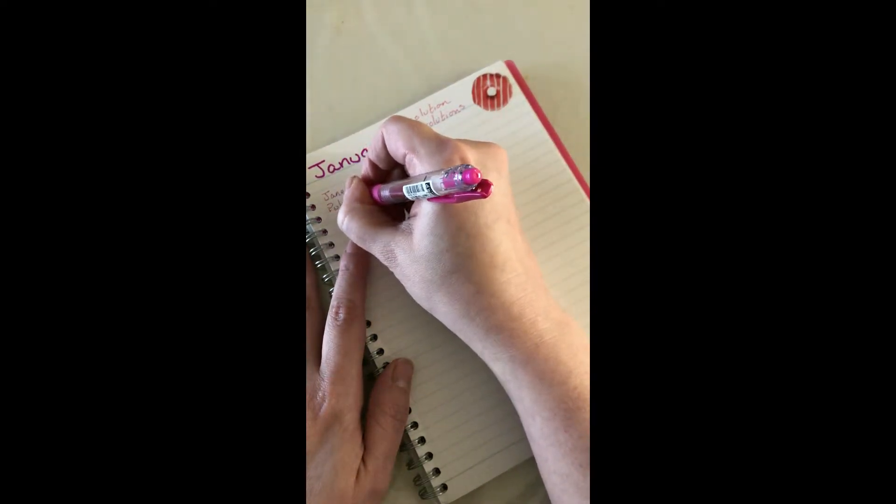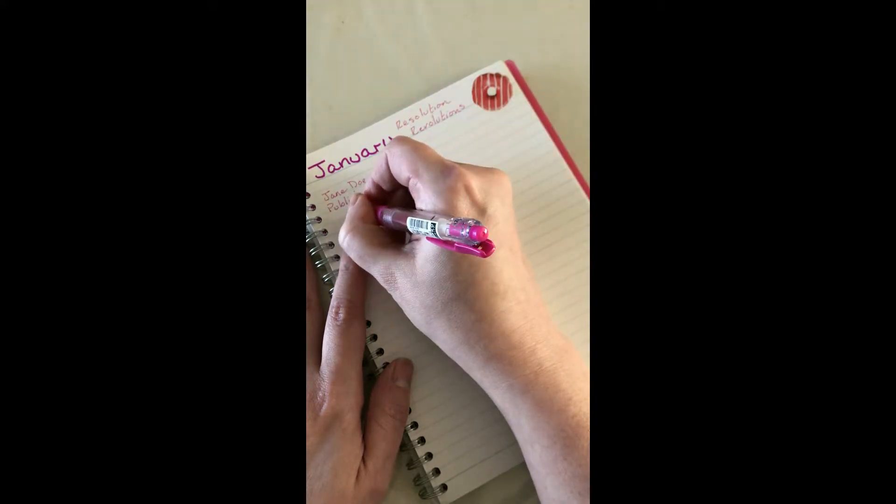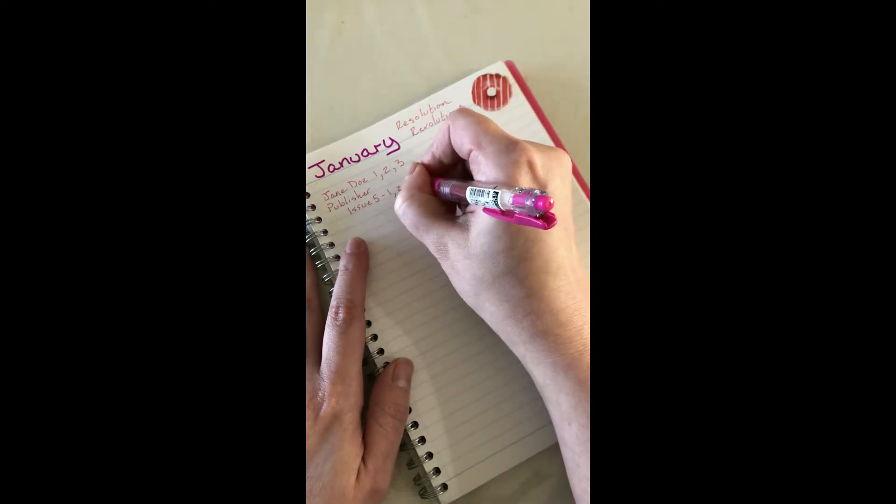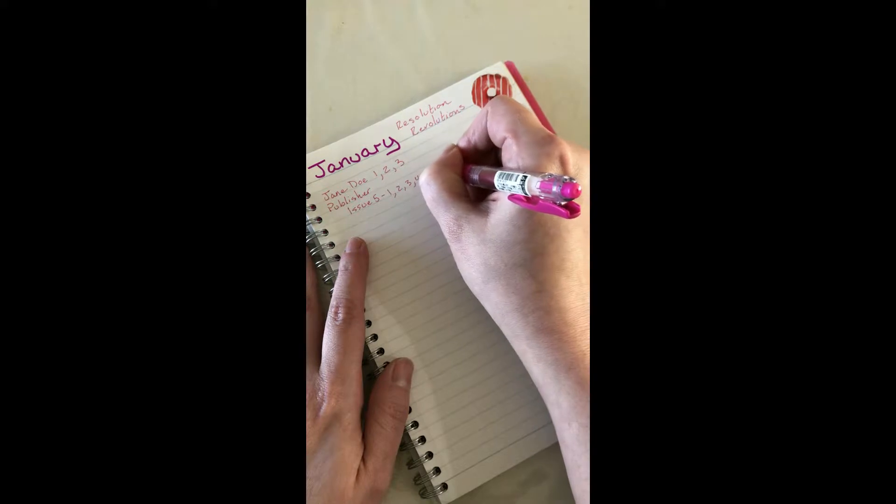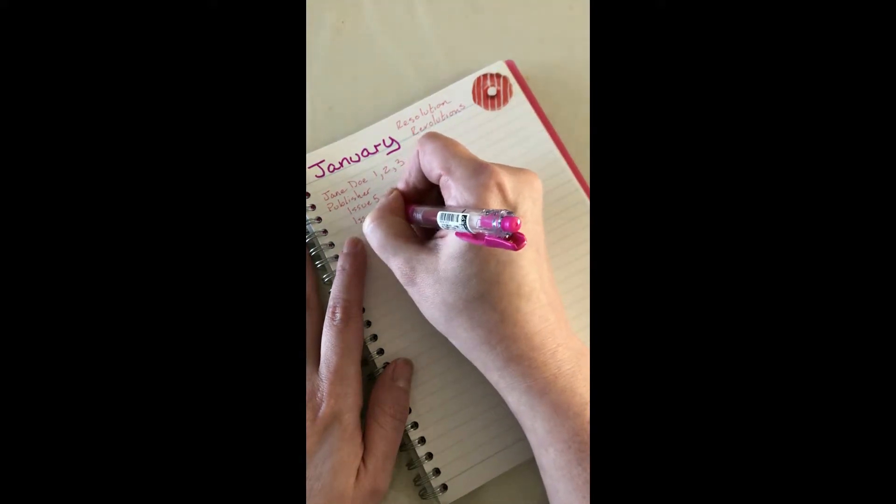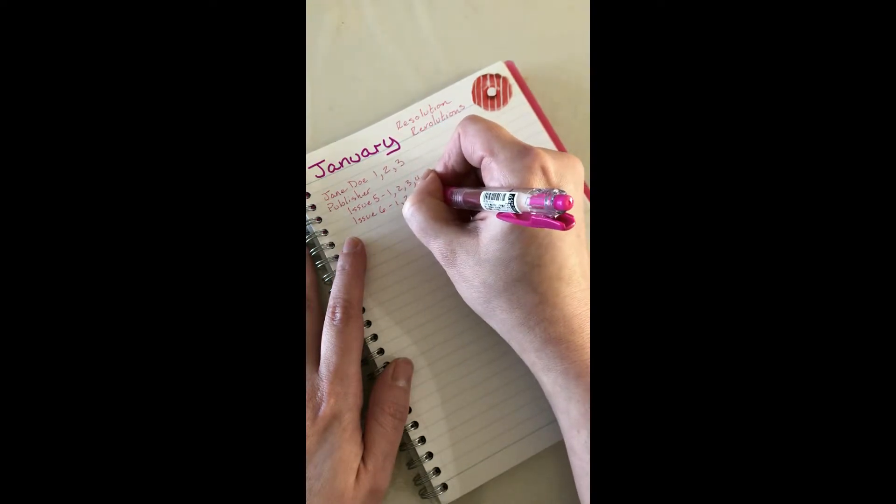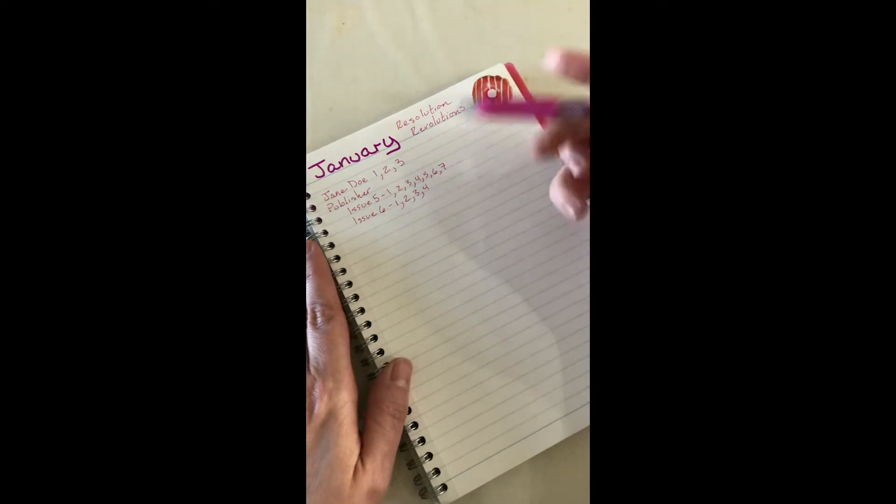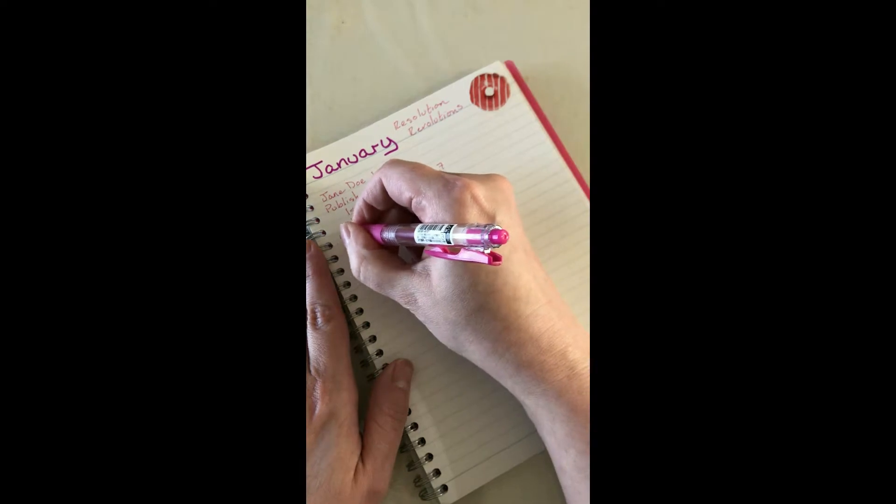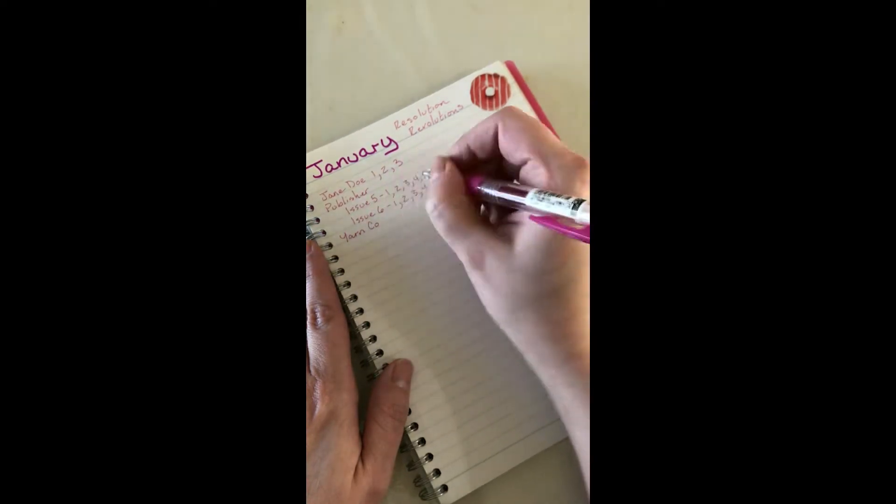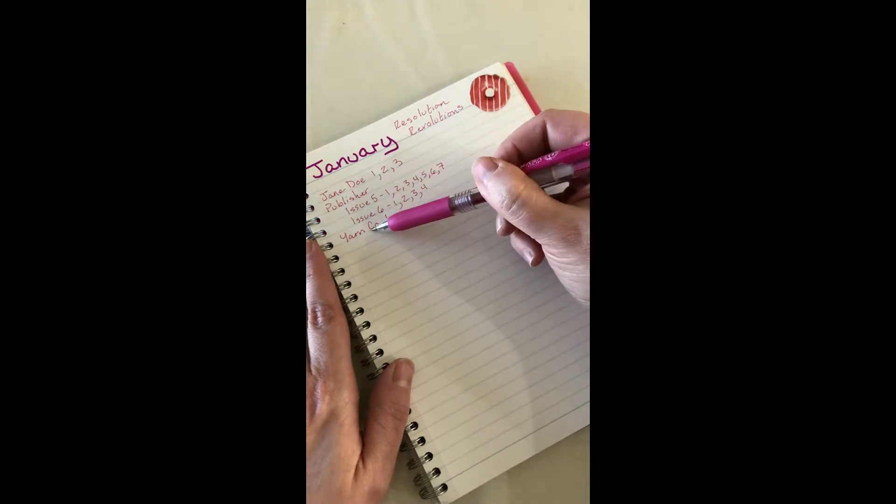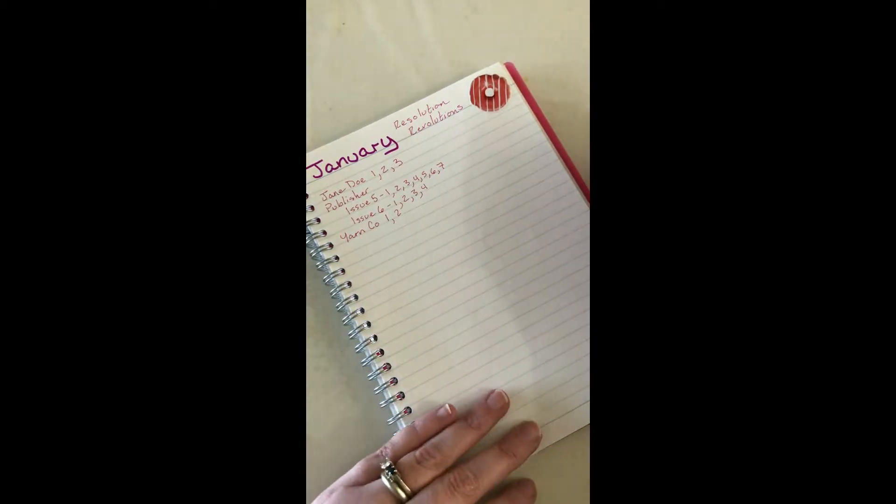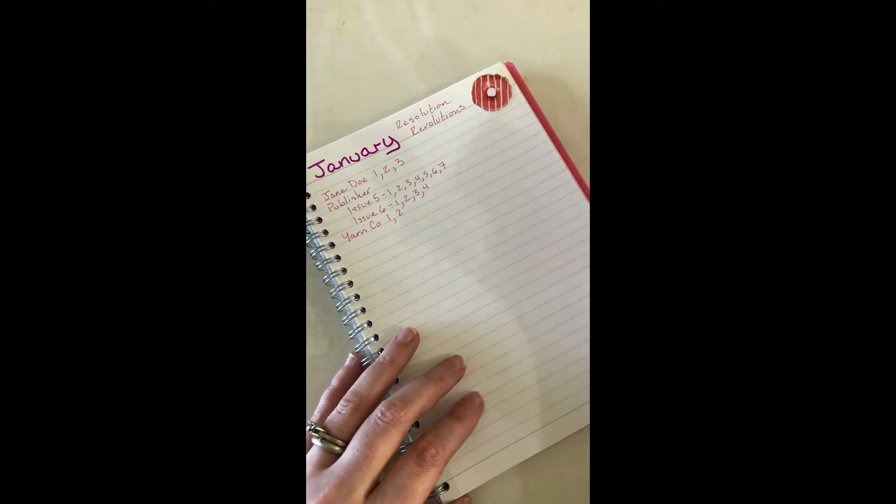A publisher I work for has sent me let's say issue five, maybe I have seven patterns to tech edit there. Maybe issue six for some reason I only got five or four, and I just kind of write that out so I see what I've got to get through. Maybe a yarn company sent me one. Obviously I'd write in the client names here instead of just yarn company or publisher.